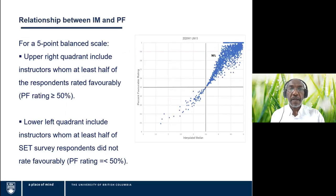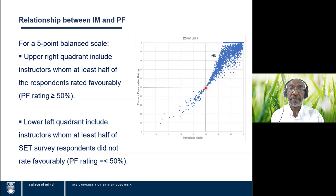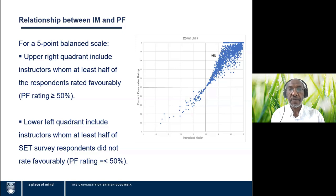The relationship between the interpolated median and percent favorable underpins the whole idea of using these measures. If we plot the interpolated median and percent favorable for any question — this happens to be question UMI5 — we see that the pivot point at an interpolated median of 3.5 and a percent favorable of 50% divides the data into two parts. In the upper right quadrant, 96% of the instructors received 50% or more favorable responses. In the bottom quadrant, about 4% of instructors for that question in that year received less than 50% favorable responses.